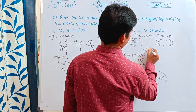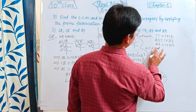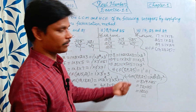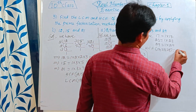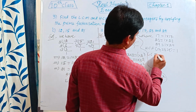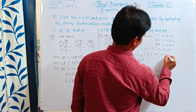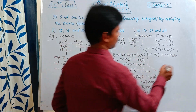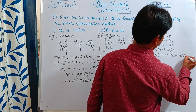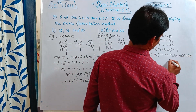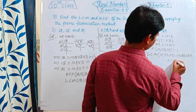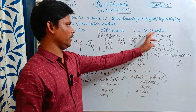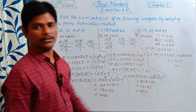So here, the HCF of 17, 23, 29 is equal to the smallest powers of common prime factors. The only common prime factor is 1. So HCF = 1. Next, the LCM of 17, 23, 29 is equal to the greatest powers of all prime factors. That is 17 × 23 × 29. Multiplying gives 11,339. That is the LCM of 17, 23, 29.